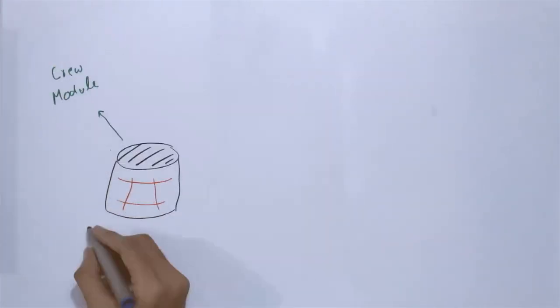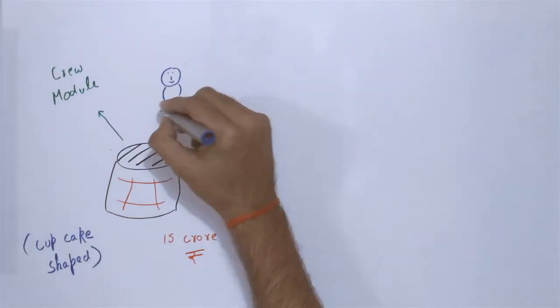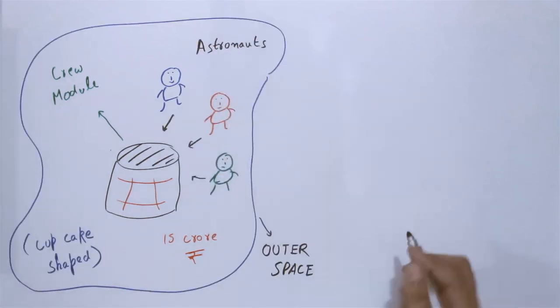On the other hand, the crew module, which cost about 15 crore rupees and can carry three astronauts into space, is one of the first ever built by ISRO.